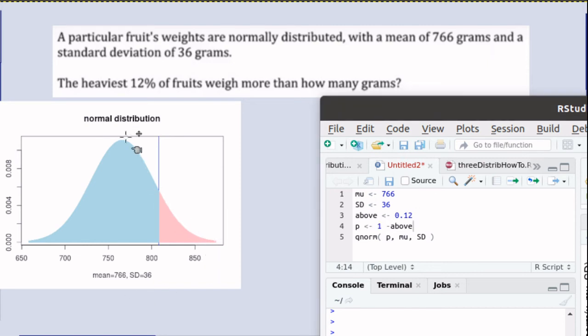Because we know that the total area under the curve is 1, if we take 1 minus this pink area, we'll be left with the blue area, and we're just going to call that P for right now for that probability. We need to give qnorm the area below.